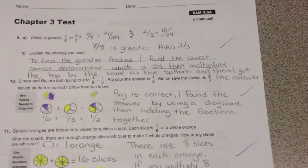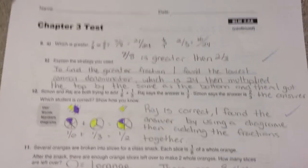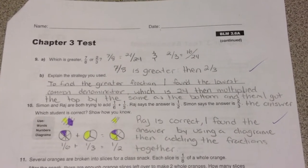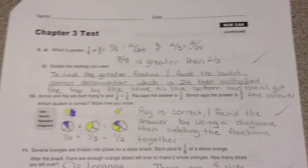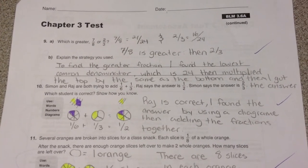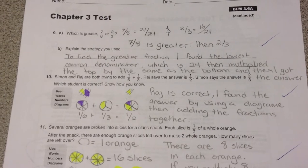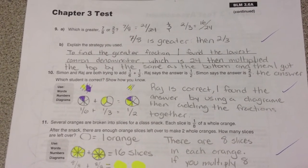In question 9, they should have come up with the fact that 7/8 is greater than 2/3. And in the explanation, they should have explained that it had something to do with the common denominator, and that by making them equivalent, it was clear that one was larger than the other.